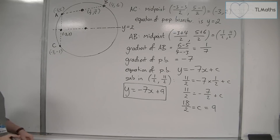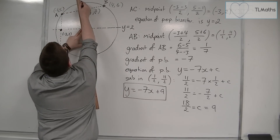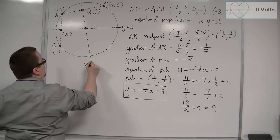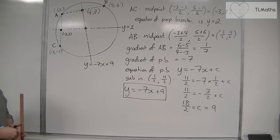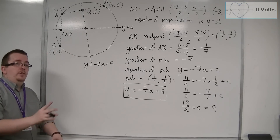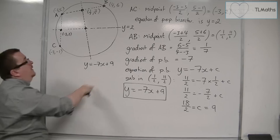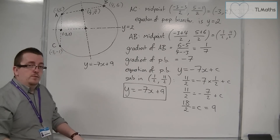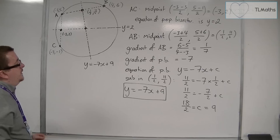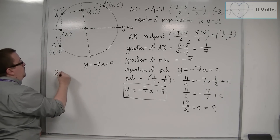So the equation of the perpendicular bisector is y equals minus seven x plus nine. That gives the equation of this line, which will go through the centre of the circle. If you find the perpendicular bisector of any two points on the outside of a circle, that line will always pass through the centre. I now have these two equations, and if both are true, their intersection is the centre point — so I'll use simultaneous equations.